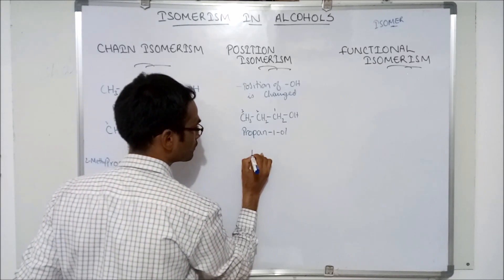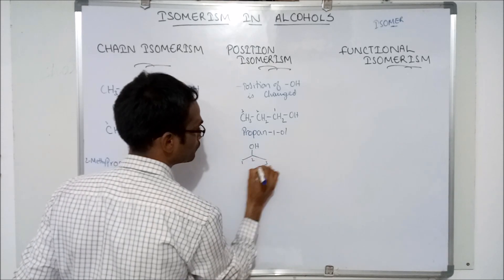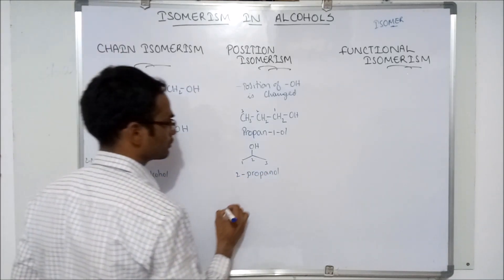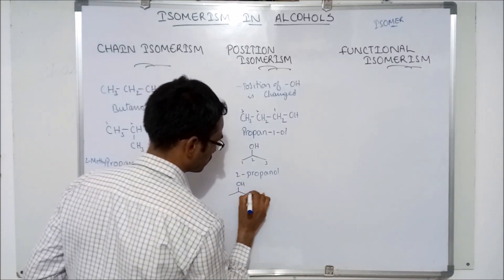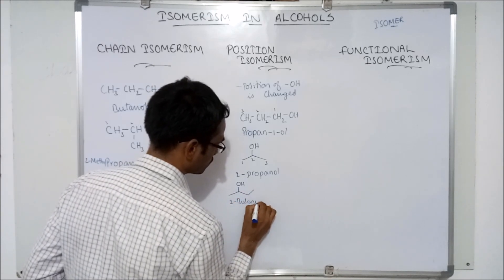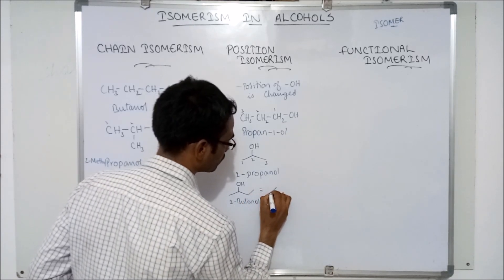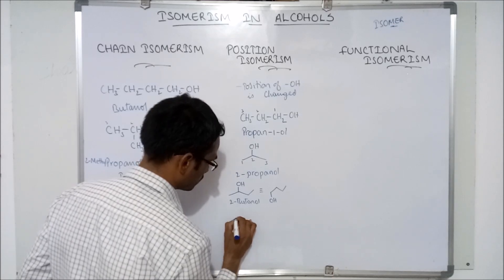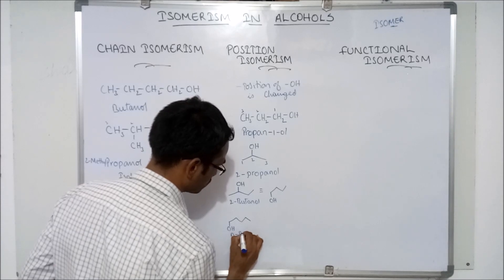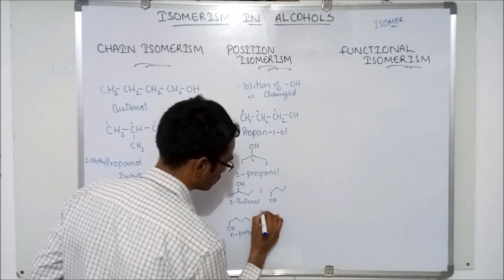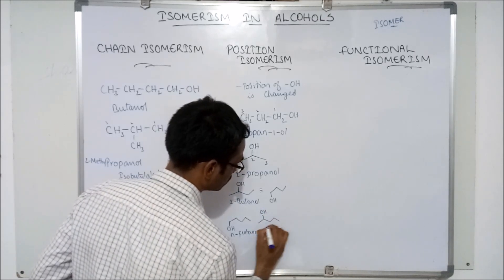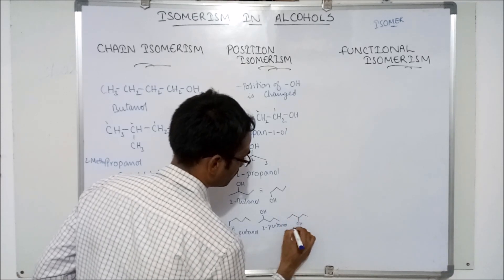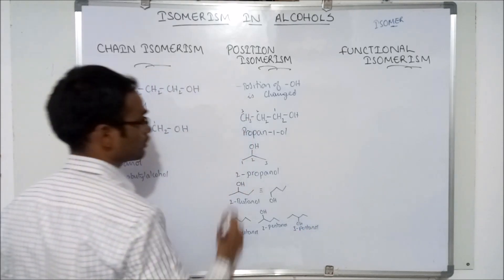Next, see this: 1, 2, 3 — this is 2-propanol; the position of the hydroxyl group is at the second position. In the same way, this is 2-butanol, and it is an isomer of N-butanol. Similarly, N-pentanol or 1-pentanol, 2-pentanol, and 3-pentanol are position isomers.